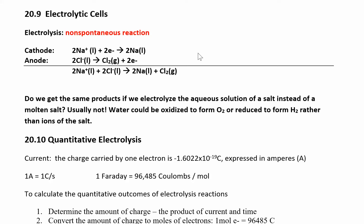Up until this point we've only really looked at spontaneous voltaic cells. Now we can look at electrolytic cells — this is where you have a non-spontaneous reaction. That's what electrolysis is. This example here is looking at the electrolysis of sodium chloride. This is how you can take sodium chloride and make liquid sodium and chlorine gas. That's not a spontaneous process; you have to force this reaction to happen.